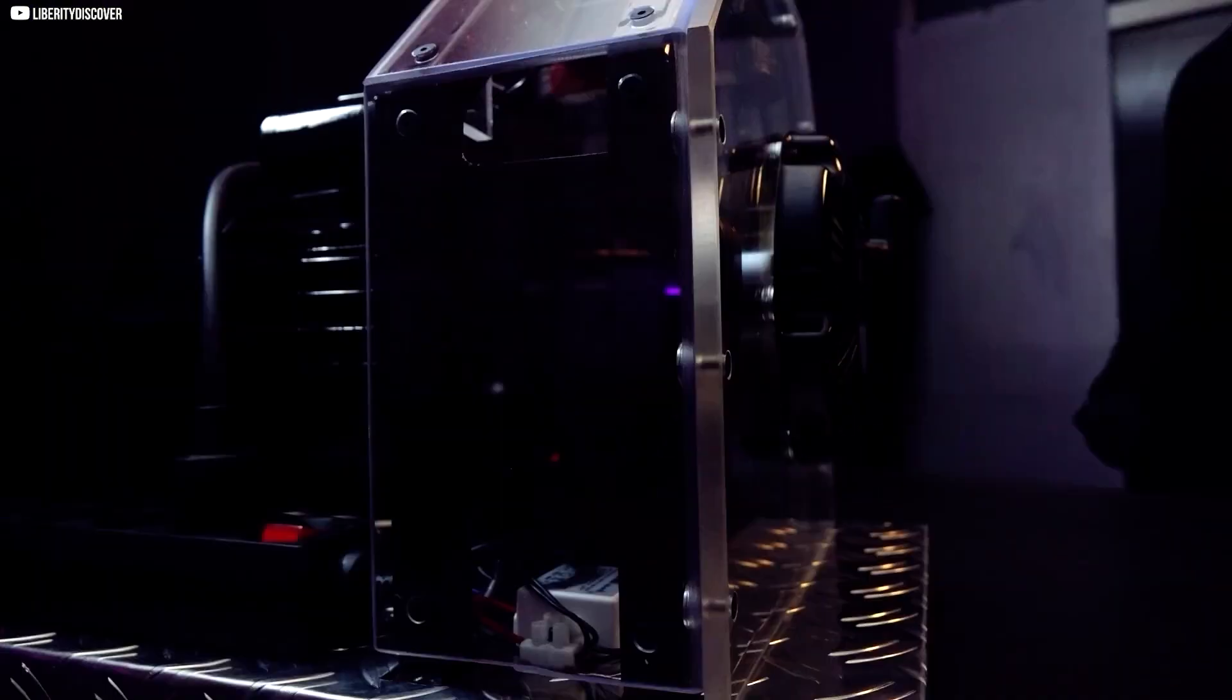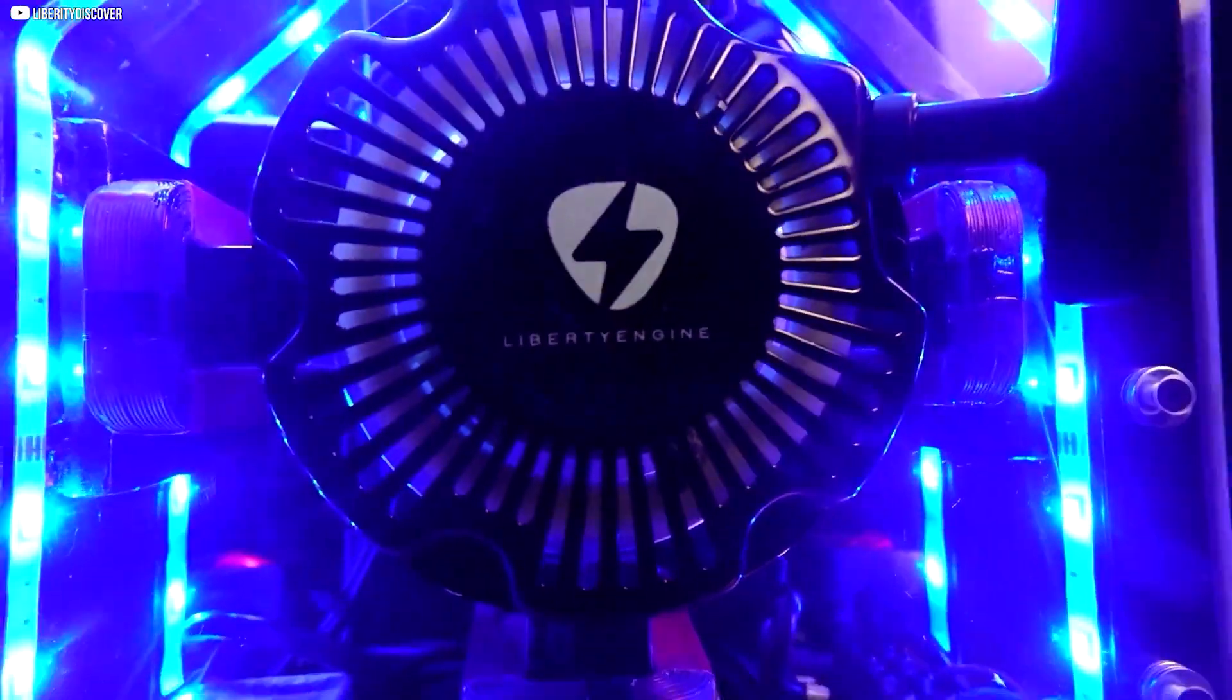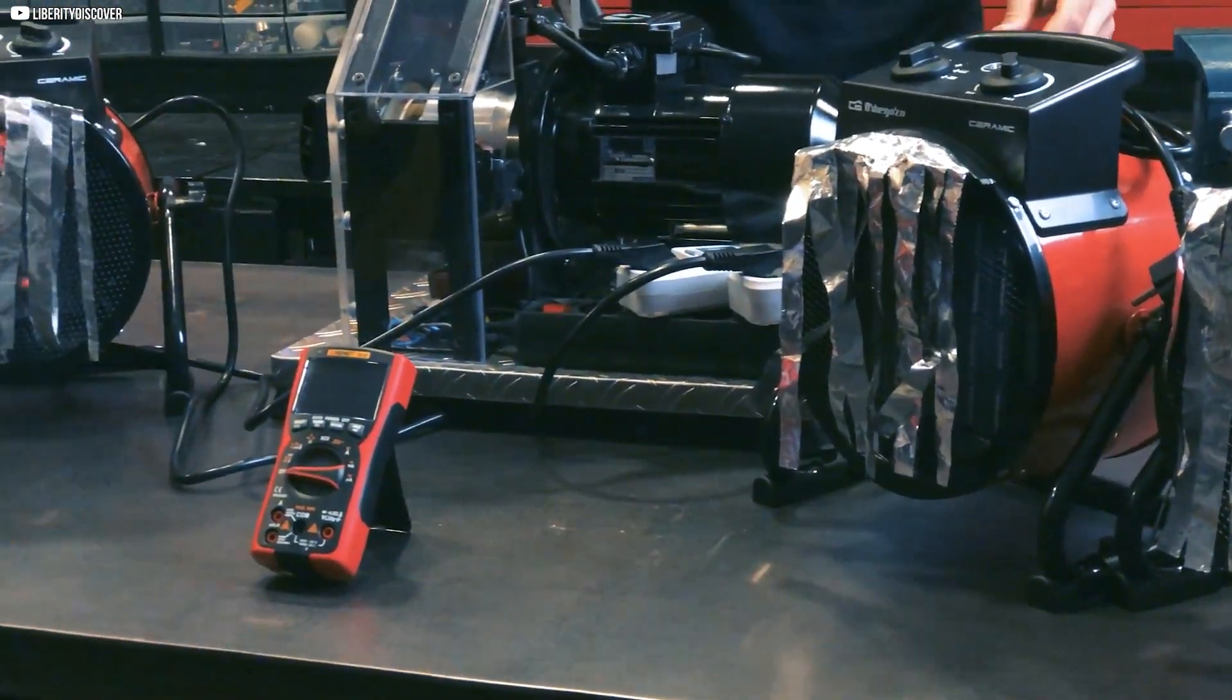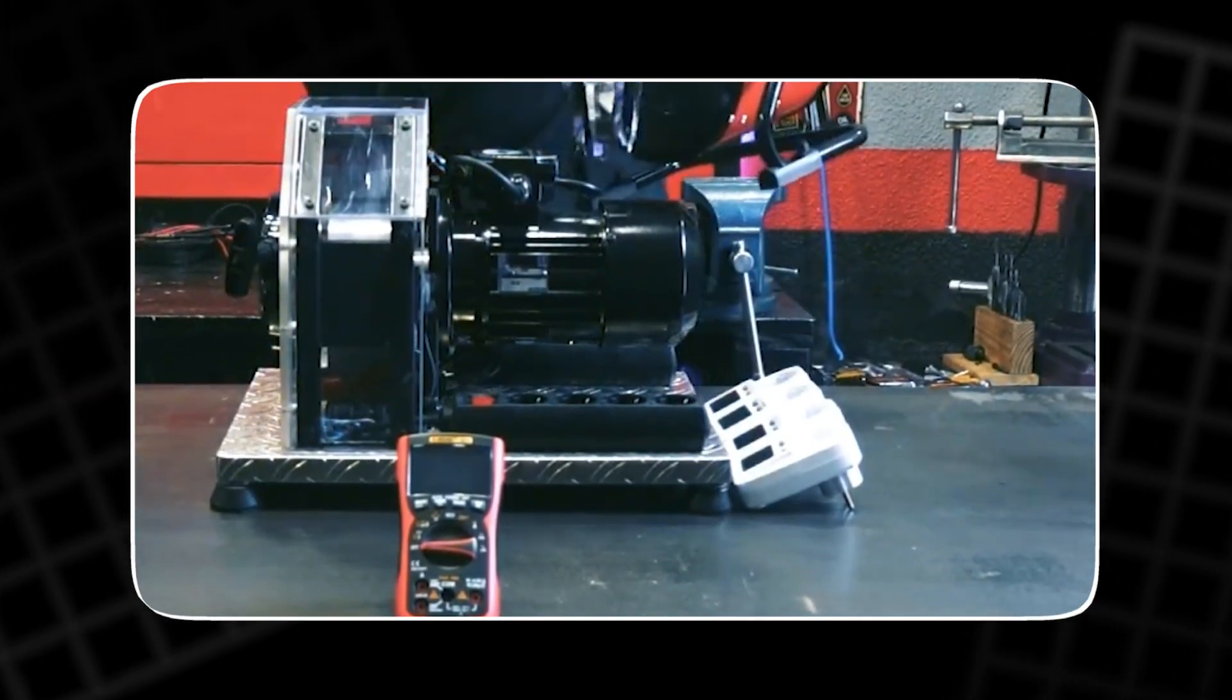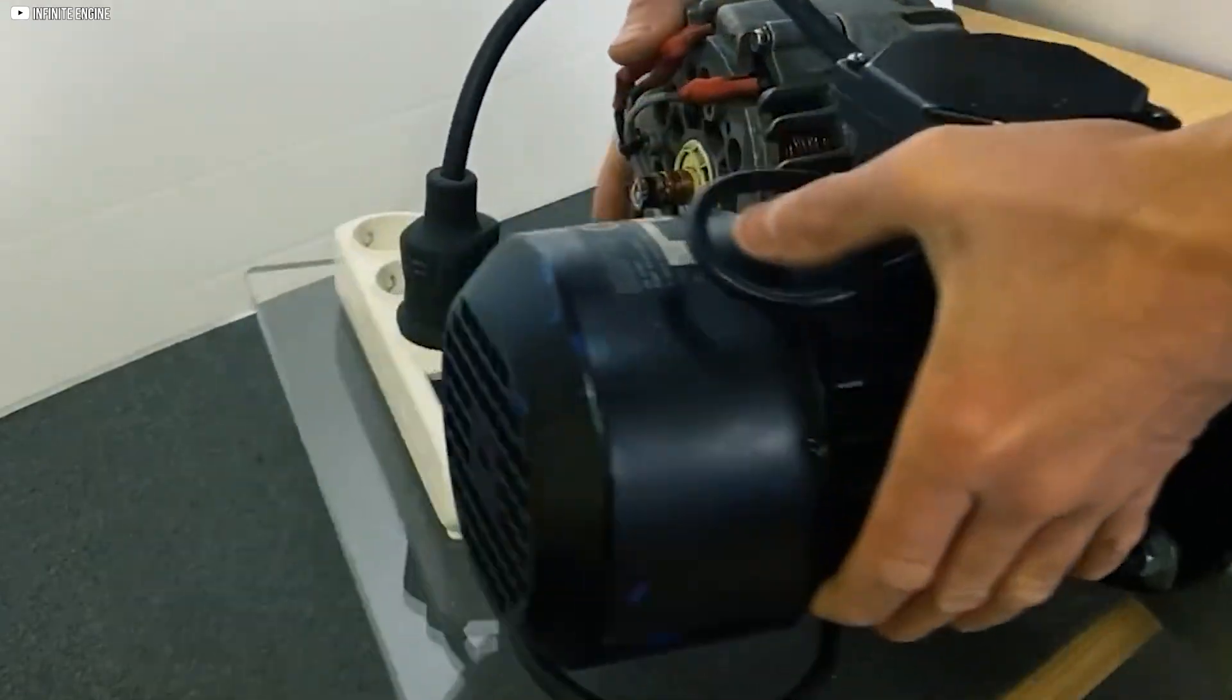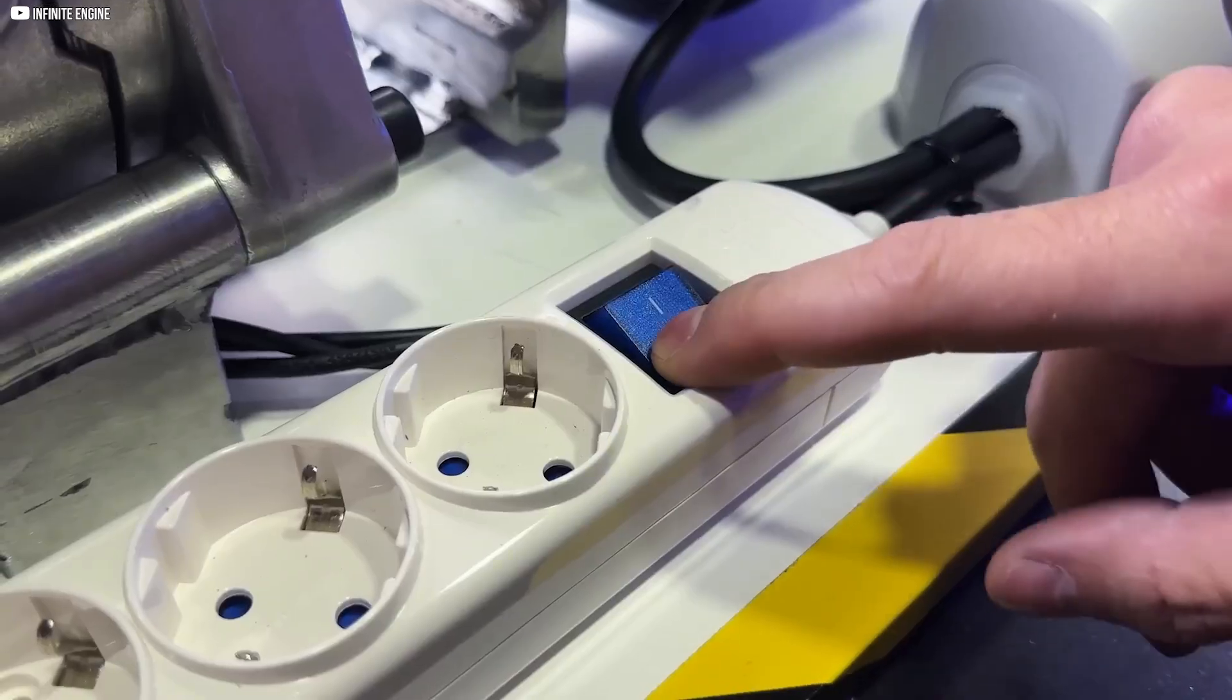Their first prototype, Liberty Engine 1.0, was met with skepticism and fascination. It showed promise but lacked transparency. Then came Liberty Engine 1.1, redesigned with a triphasic setup and improved efficiency. The team claimed it could deliver 10 kilowatts of stable energy at 230 volts between phases.